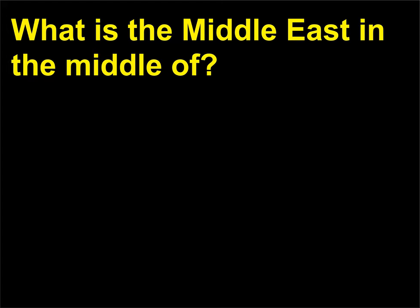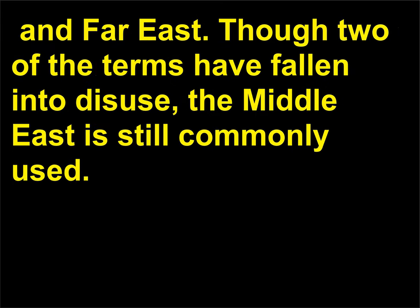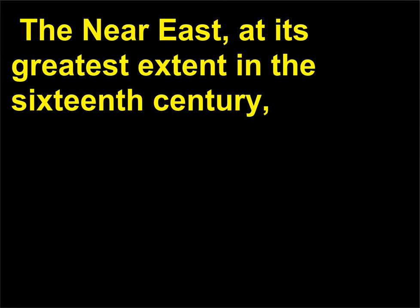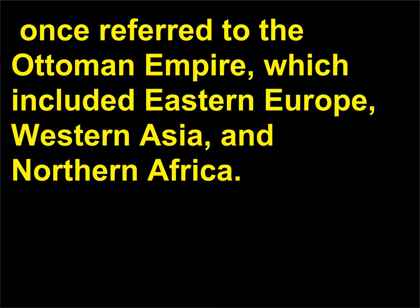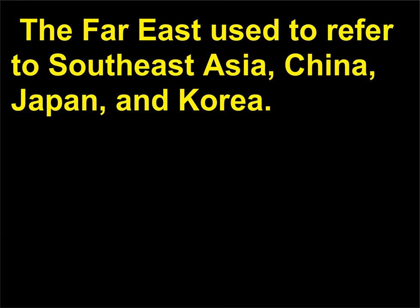What is the Middle East in the middle of? At one time, it was common to refer to the near, middle, and far east. Though two of the terms have fallen into disuse, the Middle East is still commonly used. The Near East, at its greatest extent in the 16th century, once referred to the Ottoman Empire, which included Eastern Europe, Western Asia, and Northern Africa. The Middle East referred to the area from Iran to India to Myanmar, formerly Burma. The Far East used to refer to Southeast Asia, China, Japan, and Korea.